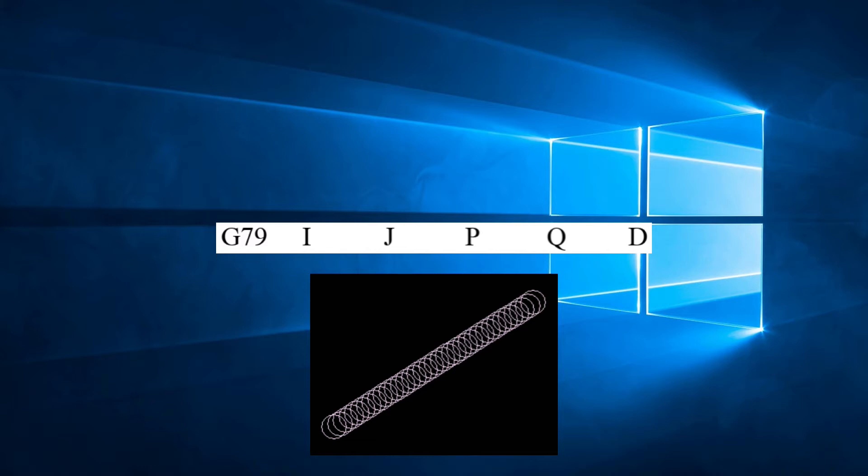The parameters for G79 are I, J, P, Q, D.